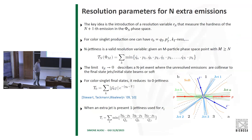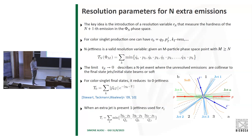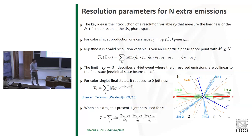Once one has generated partonic events, it is important that the partonic calculation be matched to a shower model, which is perturbative. There is also the non-perturbative part addressed by hadronization models already included in the showers. The key idea behind resolution parameters is to separate the phase space for any given calculation in terms of some resolution parameter which measures the hardness of the n+1 emission. For color singlet production, the resolution parameter for zero emissions could be the qT of the color singlet, the pT of the hardest jet, or kT-jettiness.